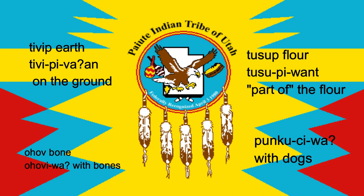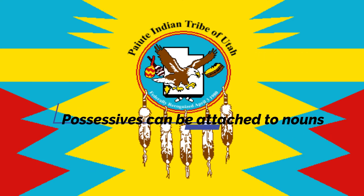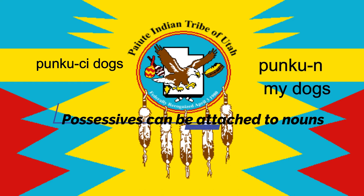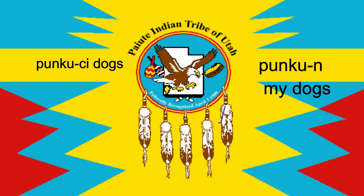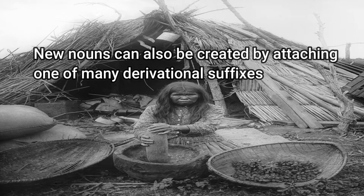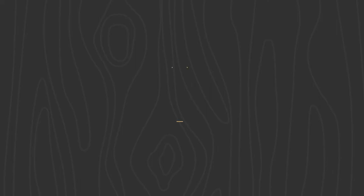Possessives can be attached to nouns. For example: pungkunsi means dogs, while pungkun means my dogs. New nouns can be created by attaching one of many derivational suffixes, such as -tsi, although this is different from the absolutive -si.